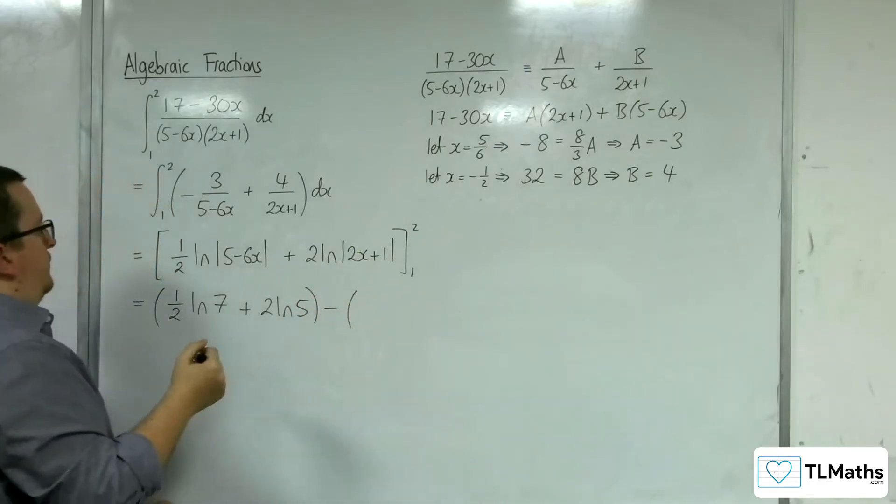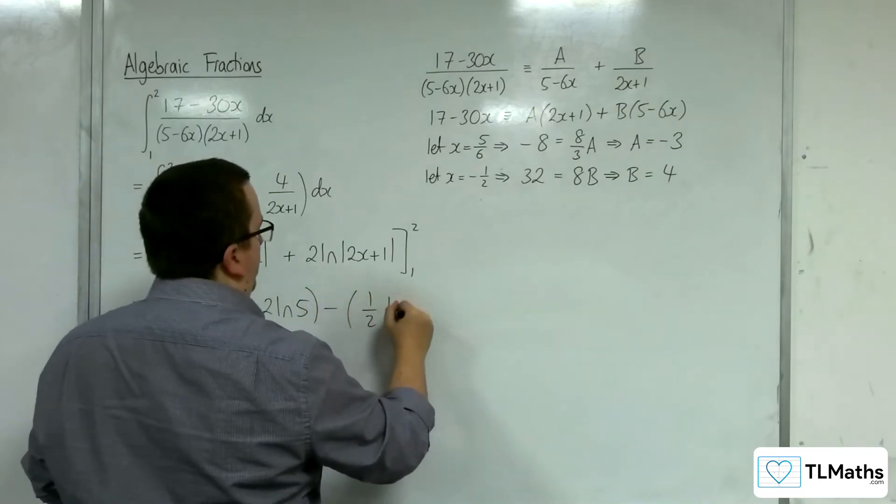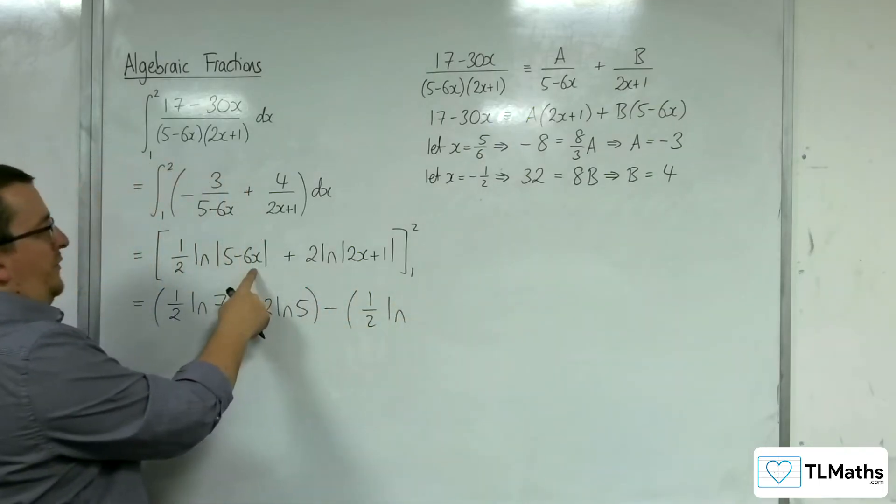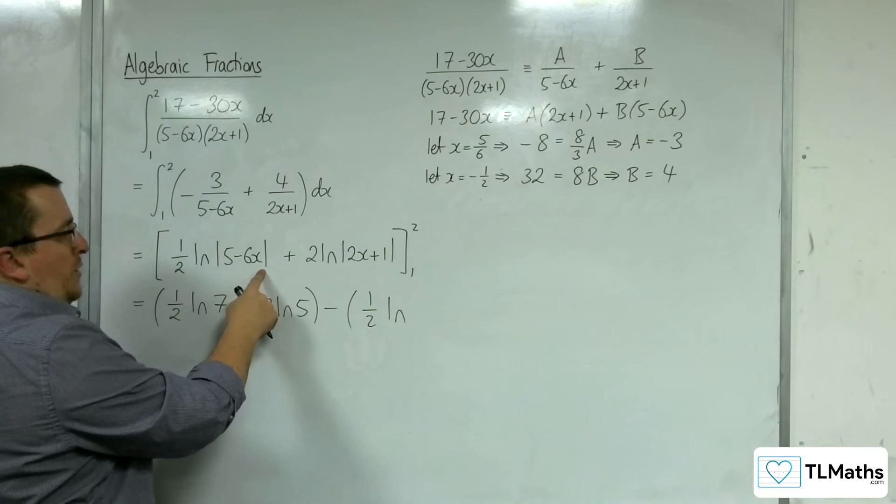Substituting the 1, we're going to get 1 half log of 5 take away 6. So, negative 1 modded is 1.